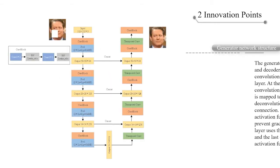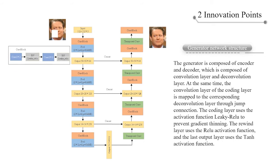Secondly, the generator is composed of an encoder and a decoder, which is composed of a convolution layer and a deconvolution layer. At the same time, the convolution layer of the coding layer is mapped to the corresponding deconvolution layer through jump connection. The coding layer uses the activation function Leaky ReLU to prevent gradient vanishing. The decoder layer uses the ReLU activation function, and the last output layer uses the tanh activation function.